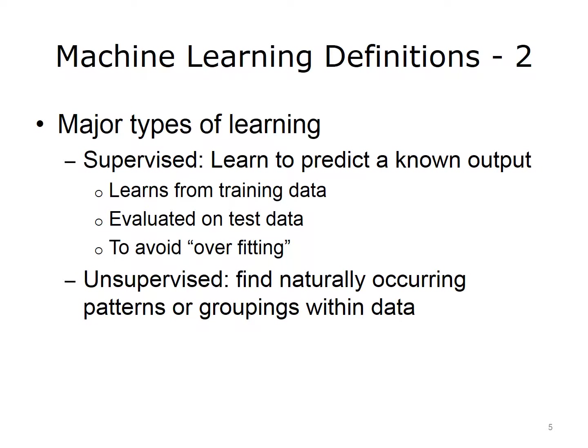The use of training and test data is done to avoid overfitting the training data. For further reading on the concept of overfitting, see the reference slides at the end of this presentation. In unsupervised machine learning, we aim to find naturally occurring patterns or groupings within the data.